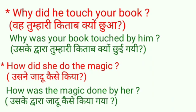Now see some interrogative sentences of past indefinite tense. 'Why did he touch your book?' — वह तुम्हारी किताब क्यों छुआ। जो आपका interrogative/question word होगा active में, उसी से passive में start कीजिए। 'Why was your book touched by him?' — 'he' subject था जो object में आकर 'him' बन गया। 'Your book' singular है इसलिए 'was' लगाया। Meaning: उसके द्वारा तुम्हारी किताब क्यों छुई गई।